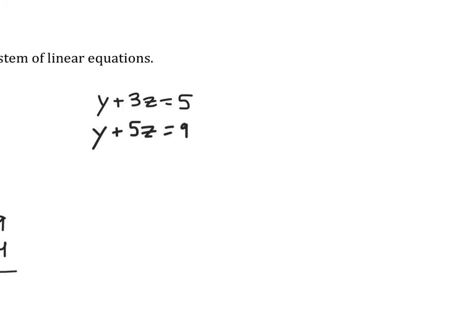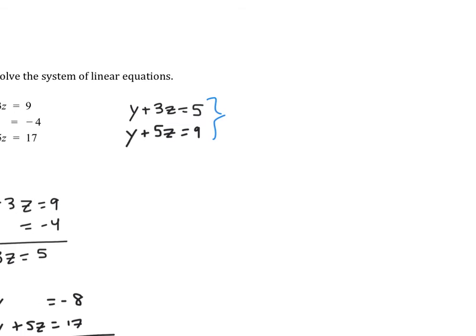So here you can solve using the method of your choice. I'm going to solve using the elimination method. So I'm going to multiply that top equation by negative 1. So when we add vertically, we get 2z equals 4. So our z value is going to equal 2.